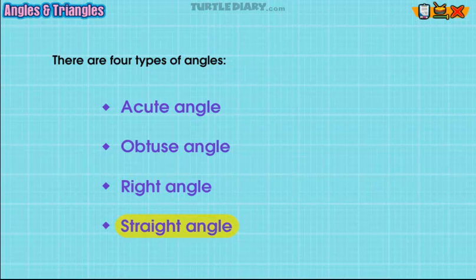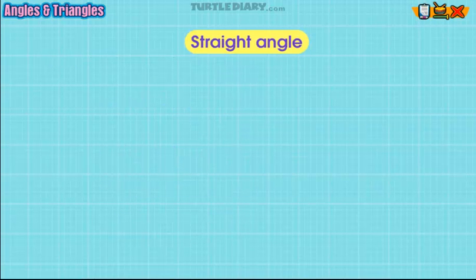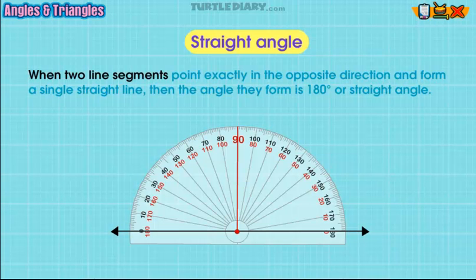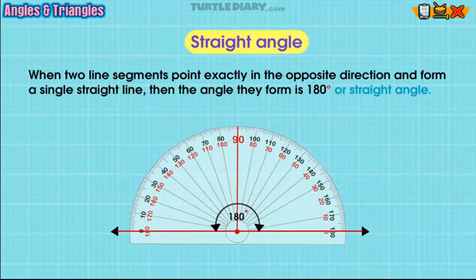Straight angle: when two line segments point exactly in the opposite direction and form a single straight line, then the angle they form is 180 degrees or a straight angle.